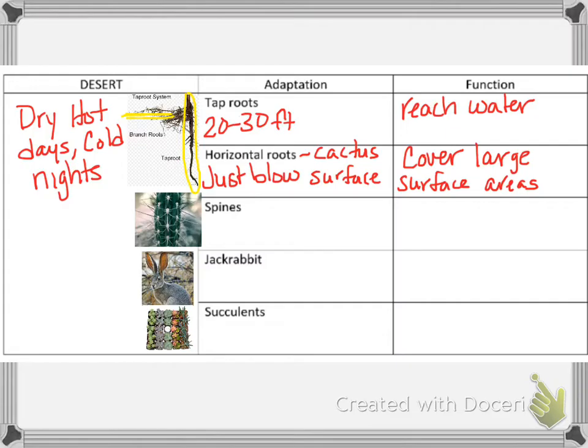Next, we have spines on the cactus. The spines reduce water loss because there's a small surface area and they don't have to go through photosynthesis, so it conserves water.